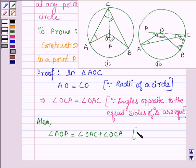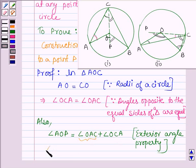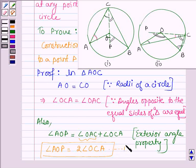Since angle OAC is equal to angle OCA in both cases, in place of angle OAC we can write angle OCA. So angle AOP equals two times of angle OCA. Let this be equation number 1.